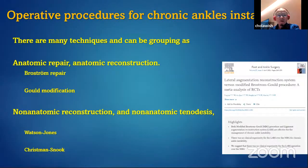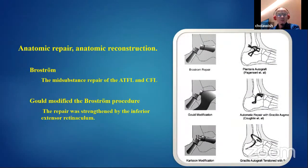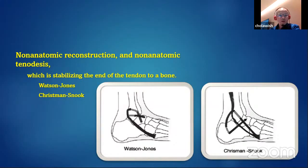Operative procedures for chronic ankle instability can be grouped as anatomic repair or anatomic reconstruction, such as the Brostrom or Gould modification. Another group is non-anatomic reconstruction, such as non-anatomic tenodesis procedures like Watson-Jones or Chrisman-Snook. Anatomic repair uses mid-substance repair of the anterior talofibular ligament and calcaneofibular ligament. Gould modified the Brostrom procedure by using the inferior extensor retinaculum to provide more stability. Non-anatomic reconstruction stabilizes the end of the tendon to the bone, making a channel in the fibula, talus, or calcaneus.